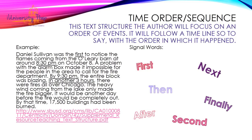The next one is time order or sequence. This text structure is where the author is going to usually focus on the order of events. It will follow a timeline with the order in which things happened. We are going to look for key words such as first, next, then, finally, second, after. Often times this is going to be written about a major event that has occurred — think about history, for example, describing the order in which things happened during World War II. Here is an example.